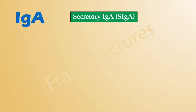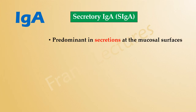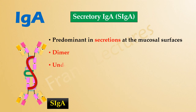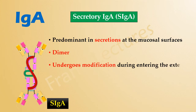Now let's see what is secretory immunoglobulin A. Secretory IgA is written as SIgA, where S is written in uppercase. These secretory IgA are predominant at the mucosal surfaces. It is also a dimer, but while entering the external secretions of the body, it undergoes some modification.